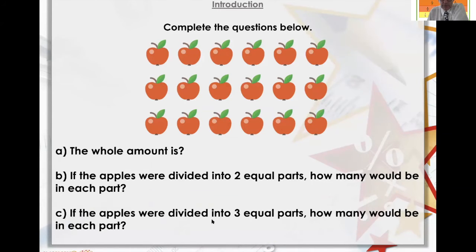If the apples are divided into three equal parts, how many would there be in each part? Put a line here and a line there. One, two, three, four, five, six. See, this is what you need to get used to children.